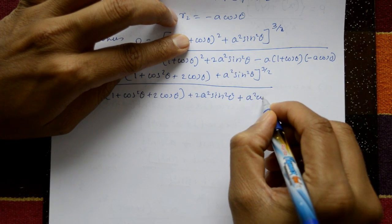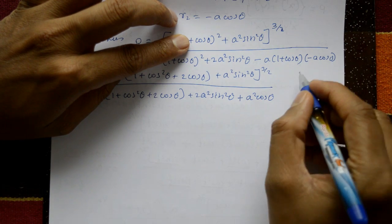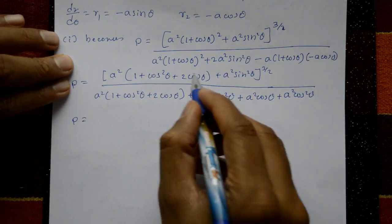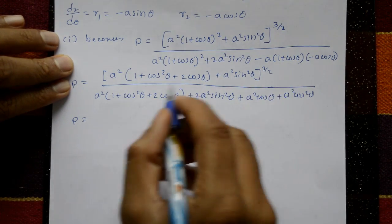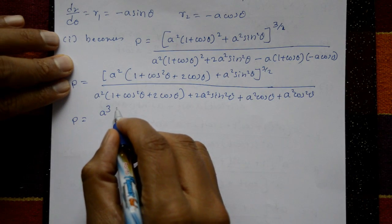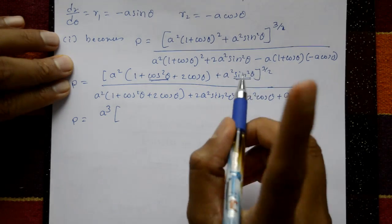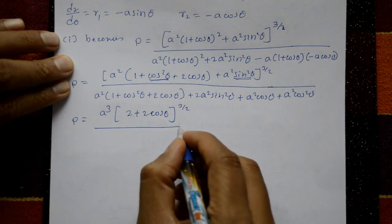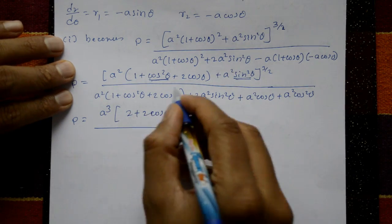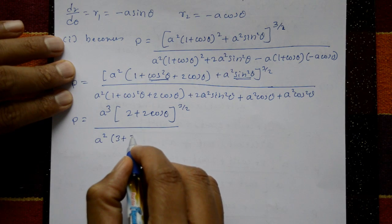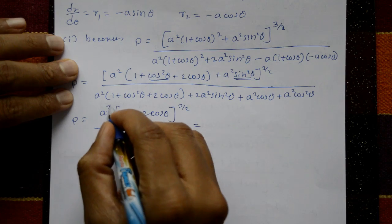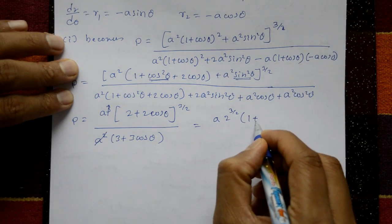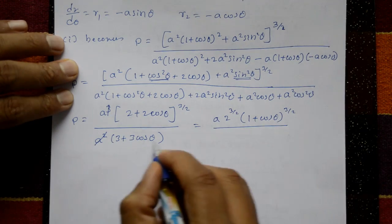In the numerator, cos²θ + sin²θ = 1, so the bracket becomes (2 + 2cosθ). Taking a² outside: numerator = a²·[2(1 + cosθ)]^(3/2). The denominator simplifies to a²·3(1 + cosθ), with a² cancelling, leaving 3(1 + cosθ). Thus ρ = a · [2(1 + cosθ)]^(3/2) / [3(1 + cosθ)].